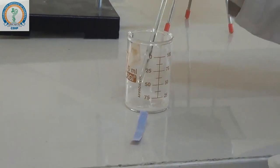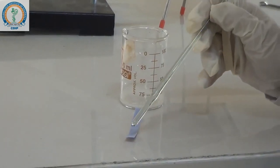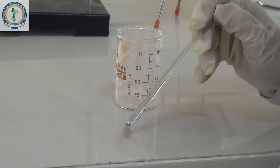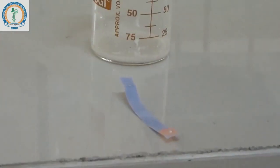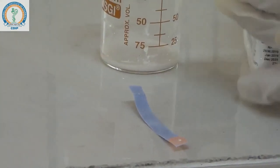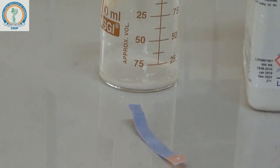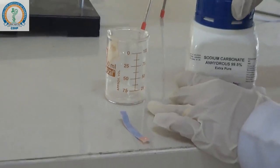Thereafter, we are going to check the pH of the reaction mixture. As we can see, it is acidic, so we need to neutralize it with the help of powdered sodium carbonate.